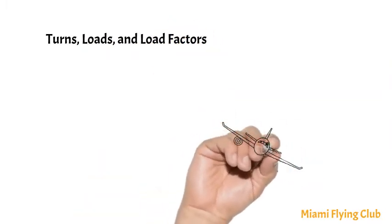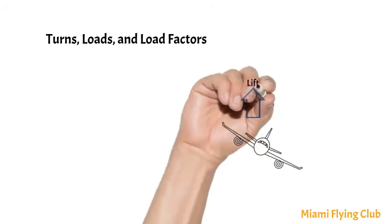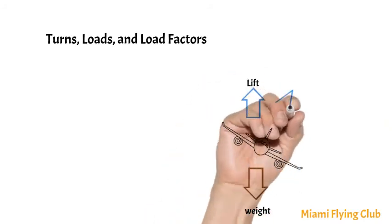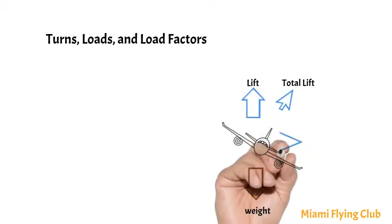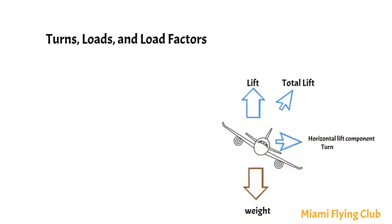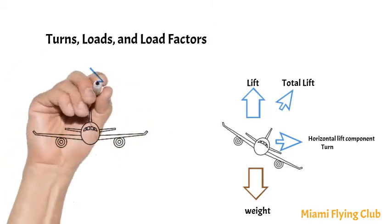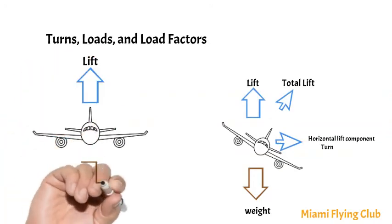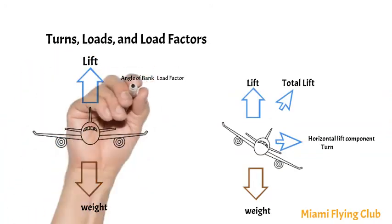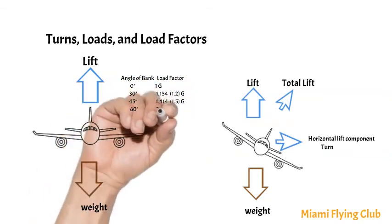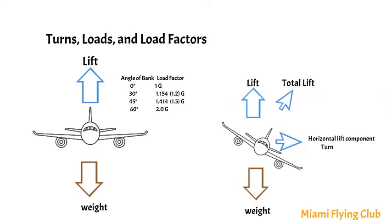When an airplane is banked into a turn, a portion of the vertical lift being developed is diverted into a horizontal lift component. It is this horizontal force that forces the airplane from straight and level flight and causes it to turn. In aerodynamics, load is the force that must be supported by the airplane structure in flight. In straight and level flight, the wings of an airplane support a load equal to the sum of the weight of the airplane plus its contents. Load factor is the ratio of the amount of load imposed on an aircraft structure to the weight of the structure itself. Load factors imposed on an aircraft in flight are expressed in G units. One G load factor is one, in which the load on the structure is equal to the weight of the structure.